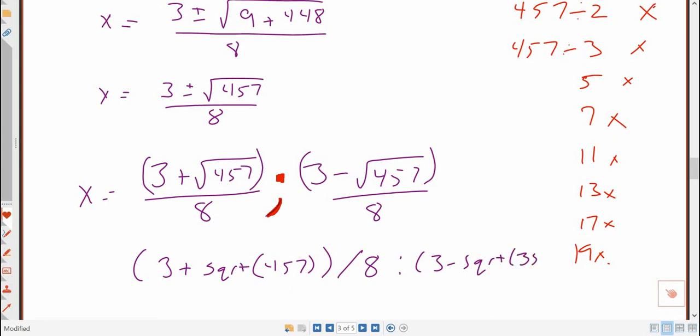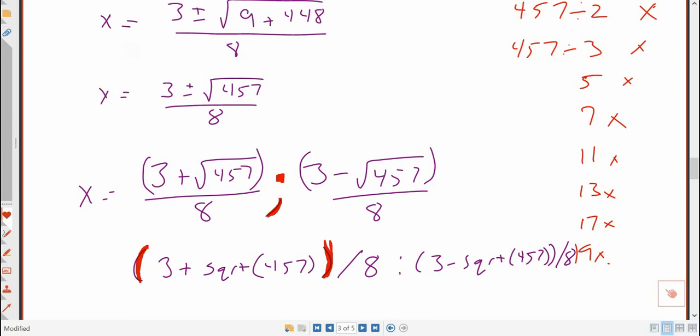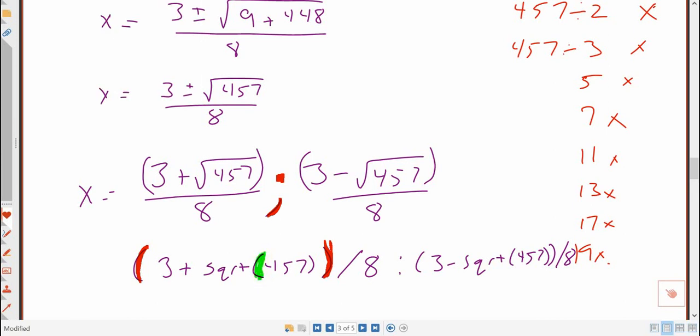which is 3, 457, sorry. Close parentheses, divided by 8. You have to have the parentheses around the numerator, and you also need to have these parentheses around the radicand, the number that's under the square root. So I hope this helps.